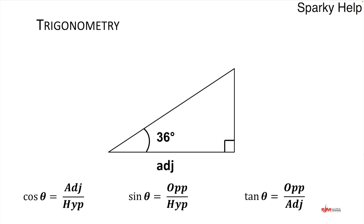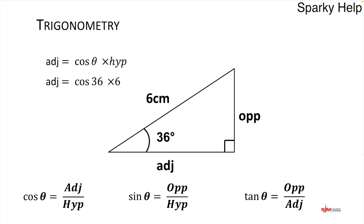We've got an angle of 36 degrees. We know this one is the adjacent, and the hypotenuse has a length of 6 centimetres. We want to find the adjacent first, so we need a formula with hypotenuse and adjacent — that's the cosine one. Rearranging: adjacent equals cosine of the angle times the hypotenuse. So cosine of 36 times 6 gives us 4.85 centimetres.